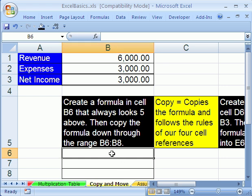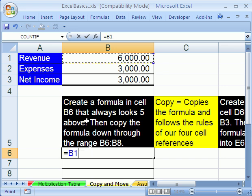Hey, in this cell right here, let's do a relative cell reference in a formula that looks 6 above. So type an equal sign and click 1, 2, 3, 4, 5. So that's 5 cells above.